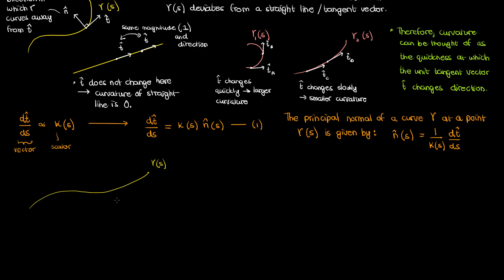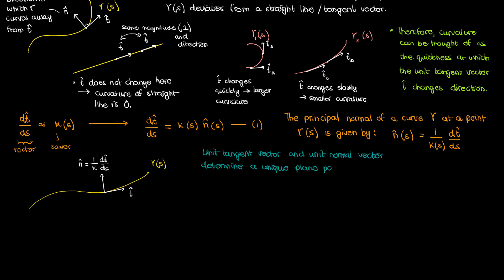If I draw my curve again, I have this unit tangent vector t and this unit normal vector that's perpendicular to the tangent vector. These two vectors n and t together make something quite special. Recall from linear algebra that a plane can be uniquely determined using two non-collinear vectors. Since the unit tangent vector and unit normal vector are perpendicular, they together determine a unique plane passing through the normal and the tangent at the point of tangency on gamma of s. This plane is called the osculating plane.